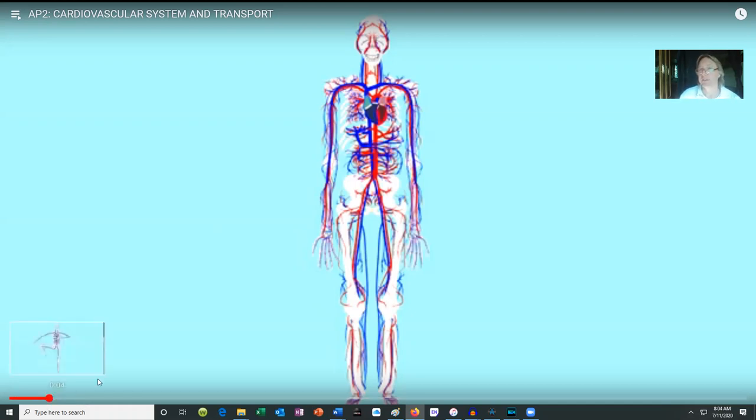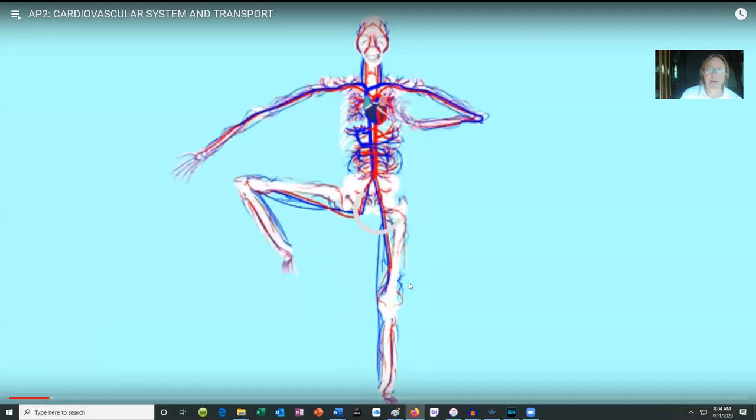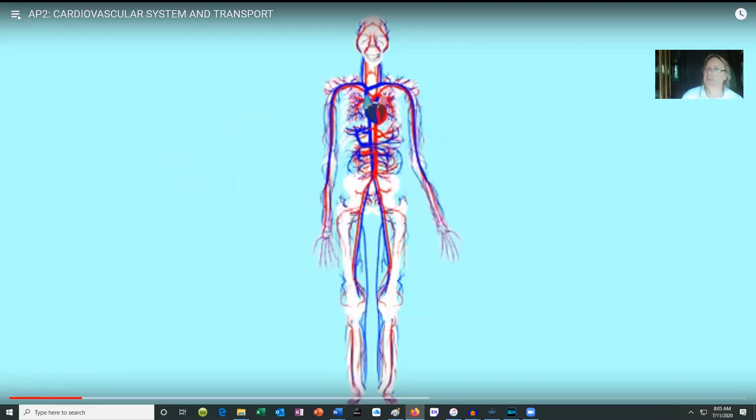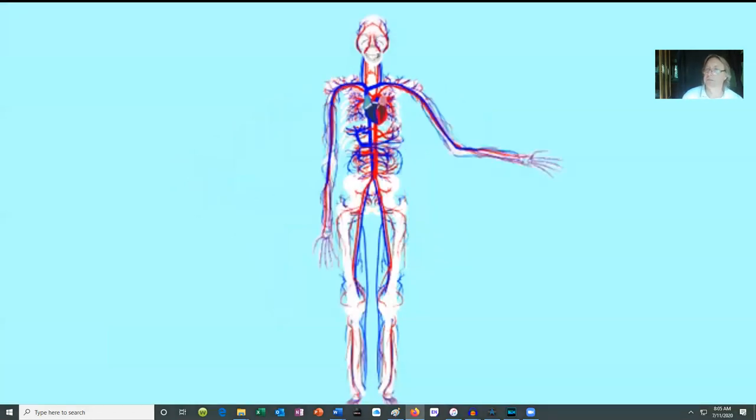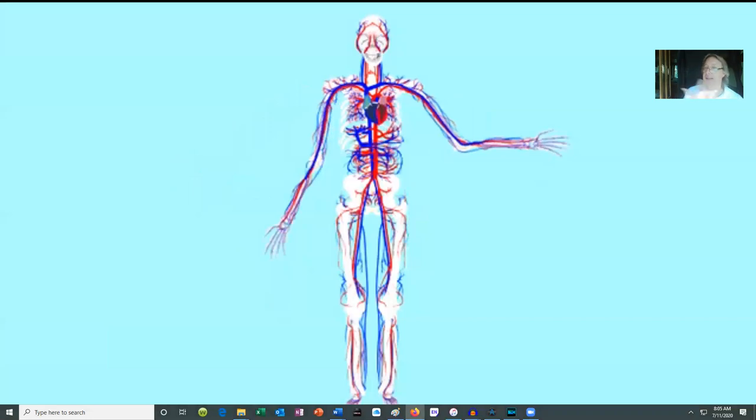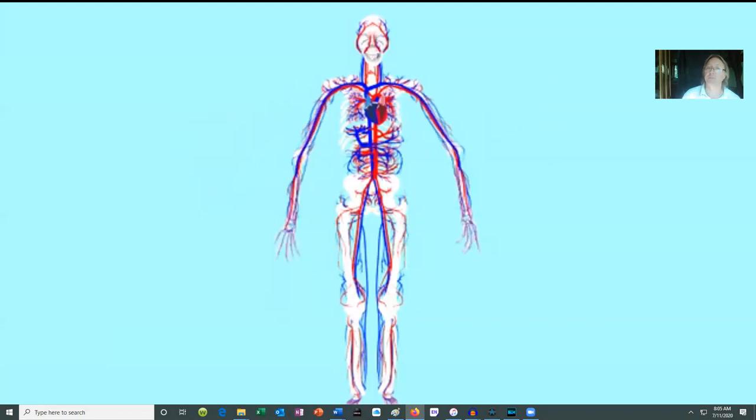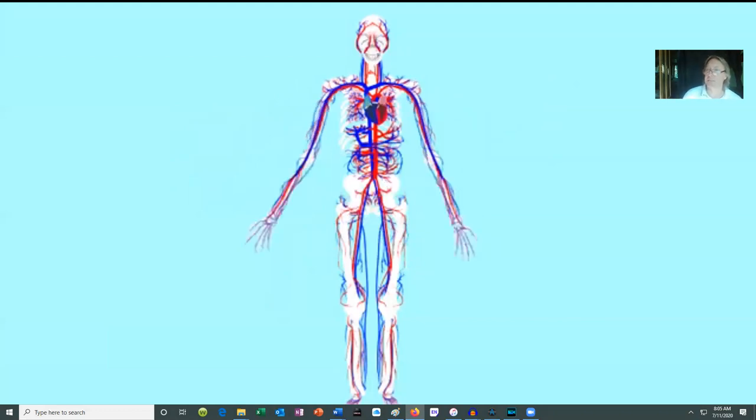First of all, we need a cardiovascular system, and that's primarily because we need to transport stuff around our bodies. So if you think about the lungs are the source of oxygen, digestive system is the source of nutrients, but these have to be transported throughout the body. In the same way, there are wastes produced in certain parts of the body or hormones produced which then have to be transported.